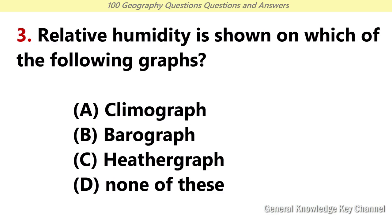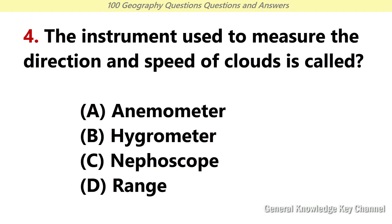Relative humidity is shown on which of the following graphs? Answer A: Climograph. The instrument used to measure the direction and speed of clouds is called? Answer C: Nephoscope.